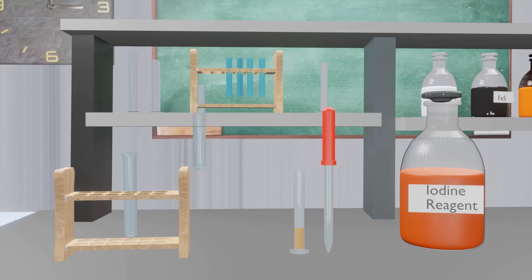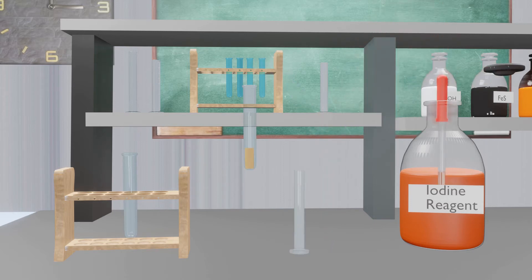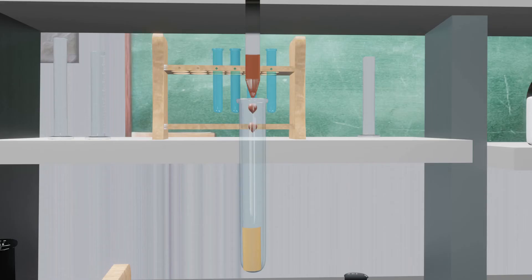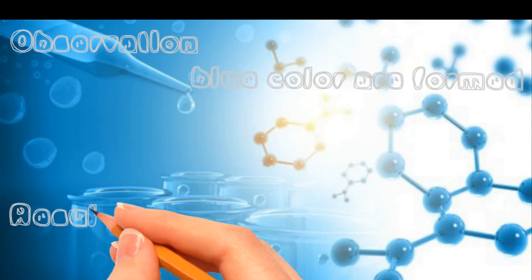Take 2 ml of the unknown solution in a test tube. Add 2 to 3 drops of iodine reagent into the test tube. The color changes to blue, which indicates the presence of starch.